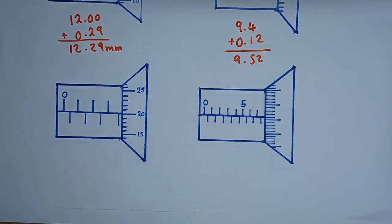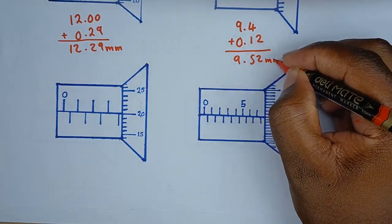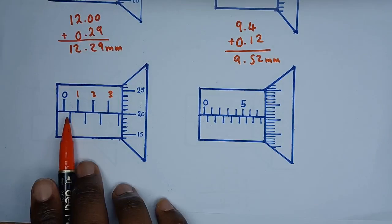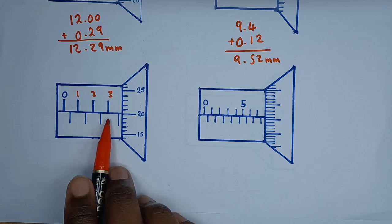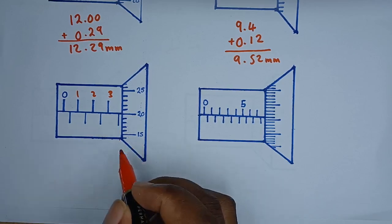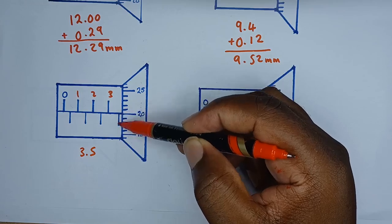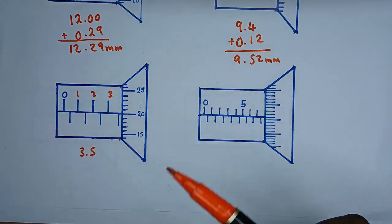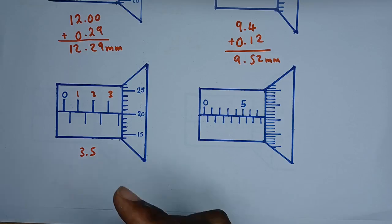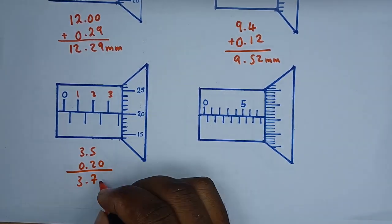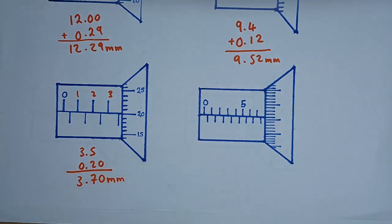This scale starts at zero with no lower marks visible. Counting: 1, 2, 3. Looking carefully, we also see the 0.5 subdivisions: 0.5, 1.5, 2.5, 3.5 — the reading has passed the 3.5 mark, so the main scale reading is 3.5, not 3. On the thimble scale the line aligns directly with 20, giving 0.20. Adding: 3.5 + 0.20 = 3.70 millimeters.